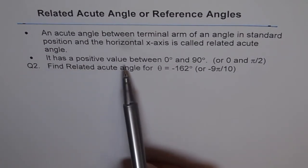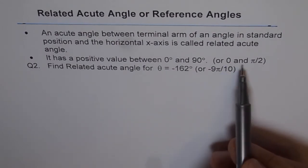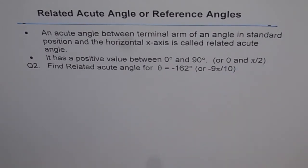It has a positive value between 0 and 90 degrees, or 0 and π/2. So that is for those who are doing in radians.